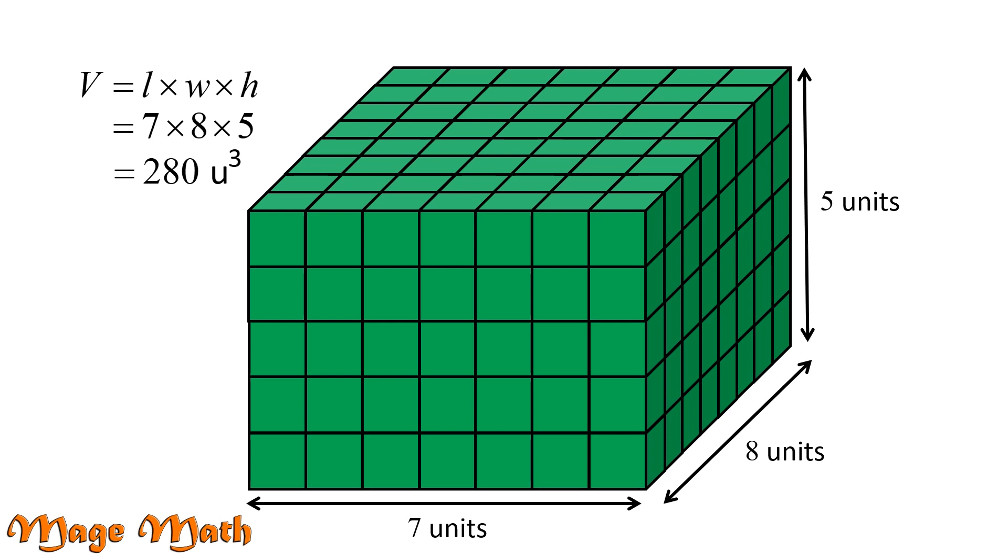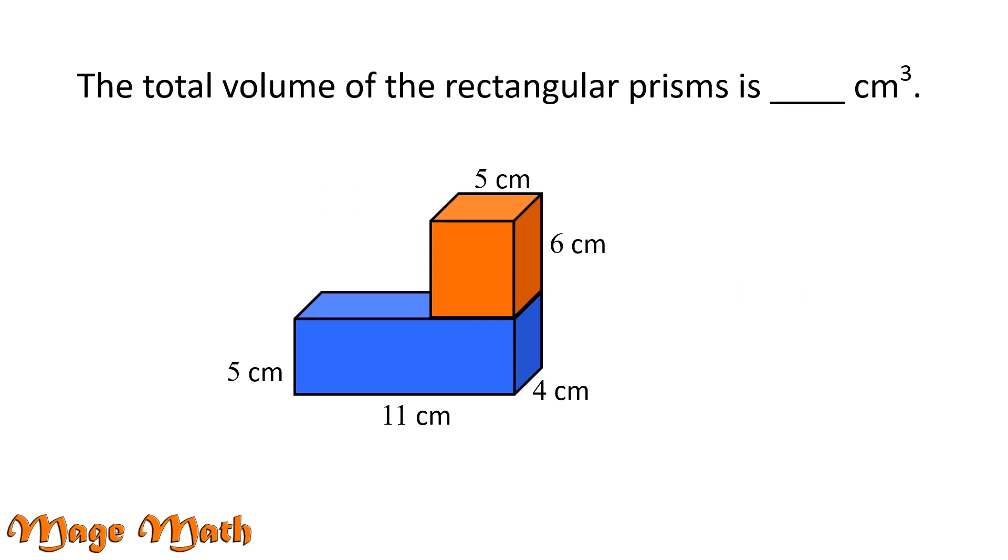The total volume of the rectangular prisms is blank centimeters cubed. To find the total volume of both rectangular prisms, we will find the volume of each prism and then add the volumes together. Let's start with the blue prism on the bottom. We know volume equals length times width times height.